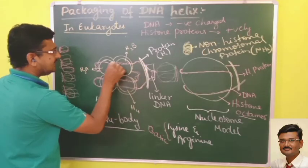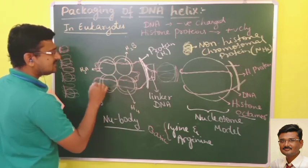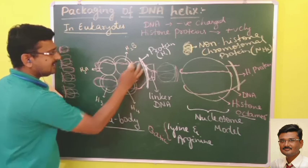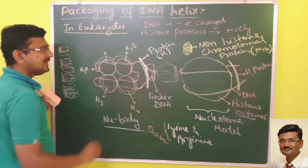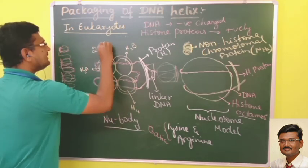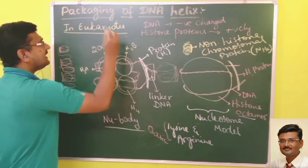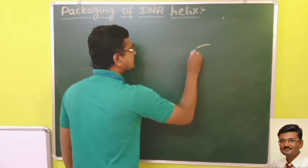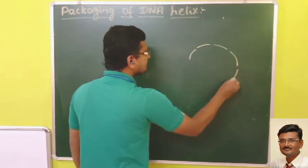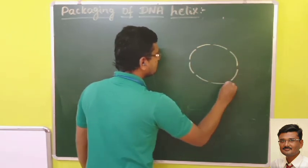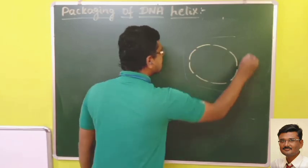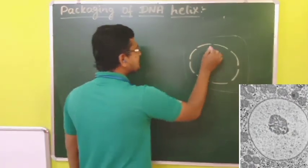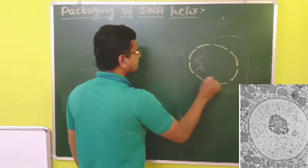The DNA that surrounds the nucleosome, including the linker DNA, has a total length of about 200 base pairs.